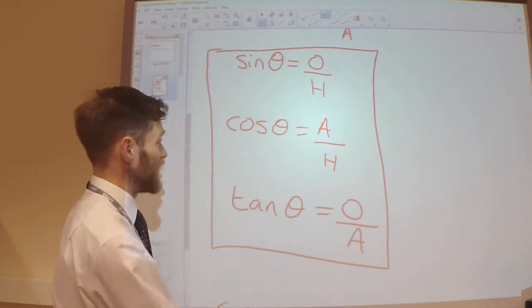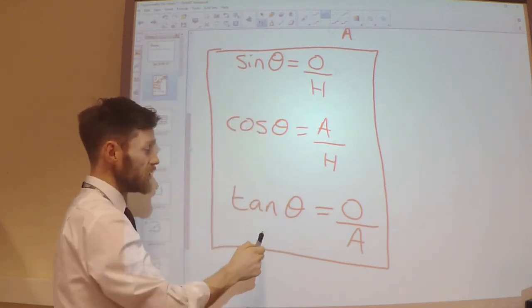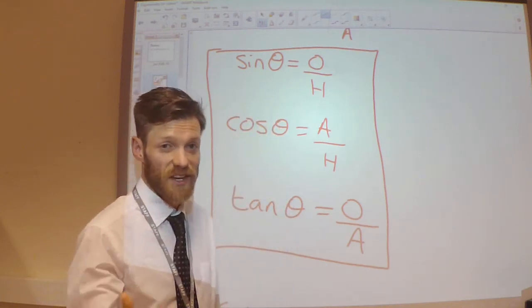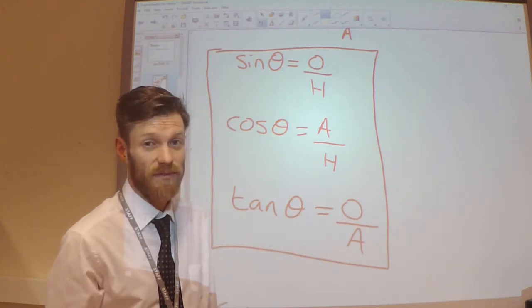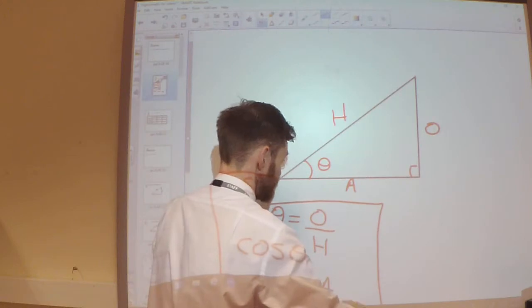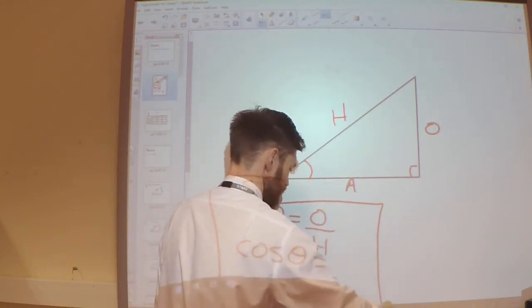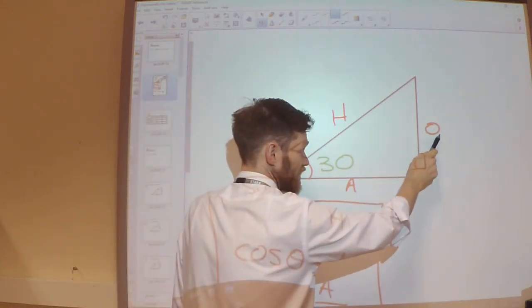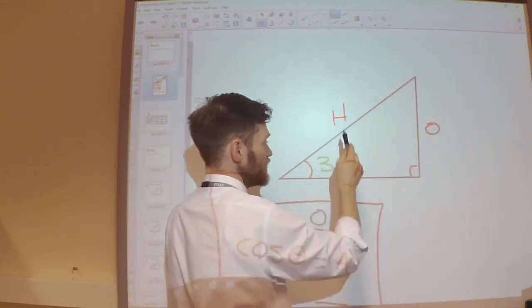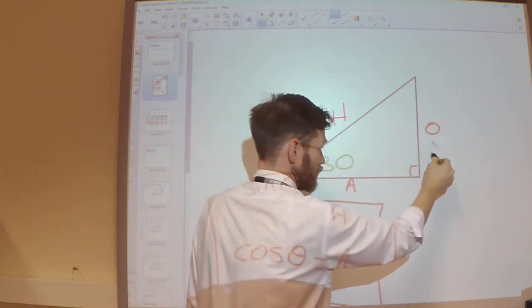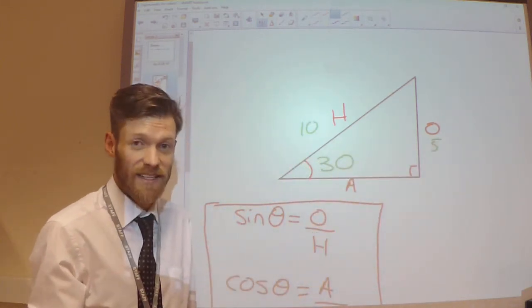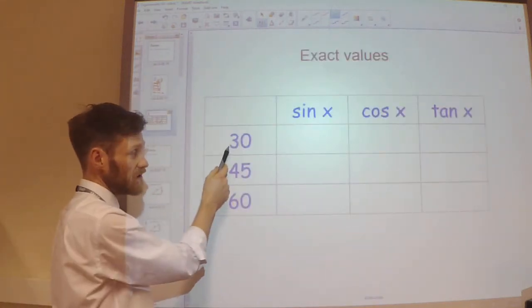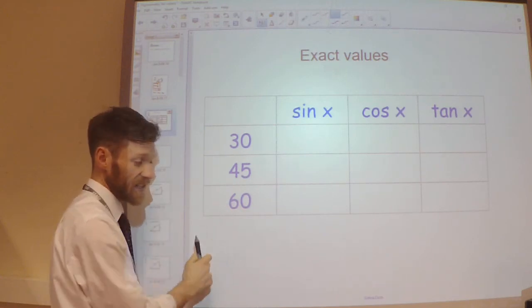You need to know the exact values of these functions for certain angles of theta. For example, sine 30 — you need to know that's a half, meaning if the angle is 30 degrees, this side is half of the hypotenuse. The values you need to know are for 30 degrees, 45 degrees, and 60 degrees.